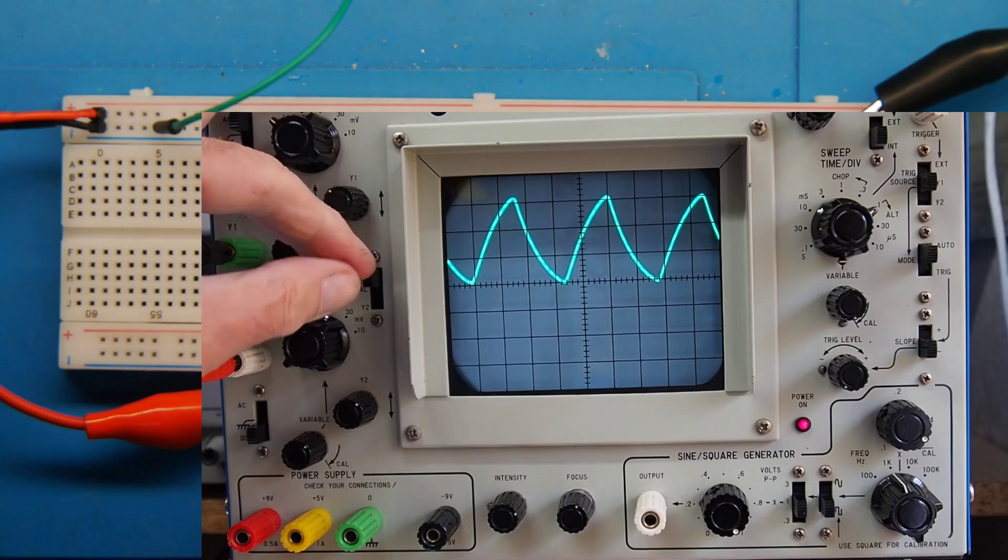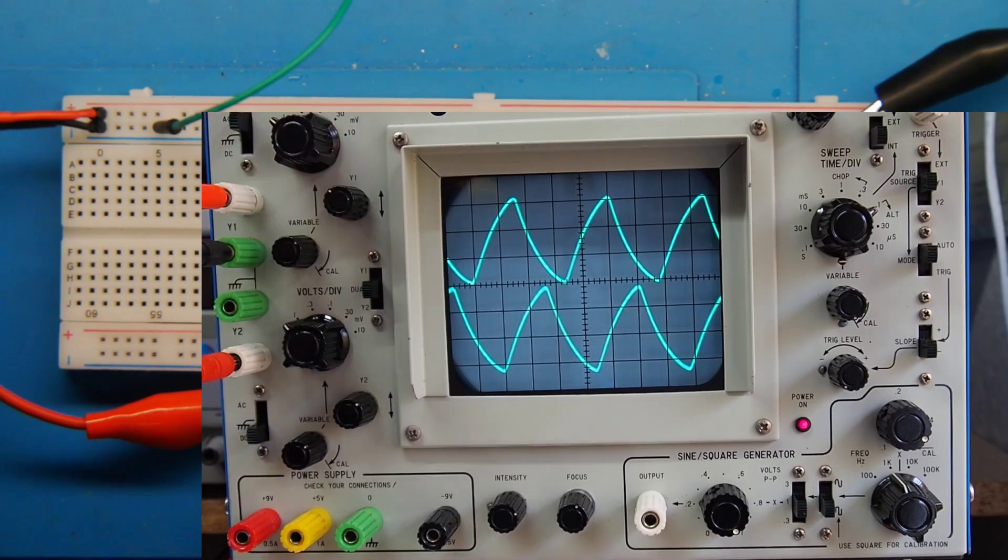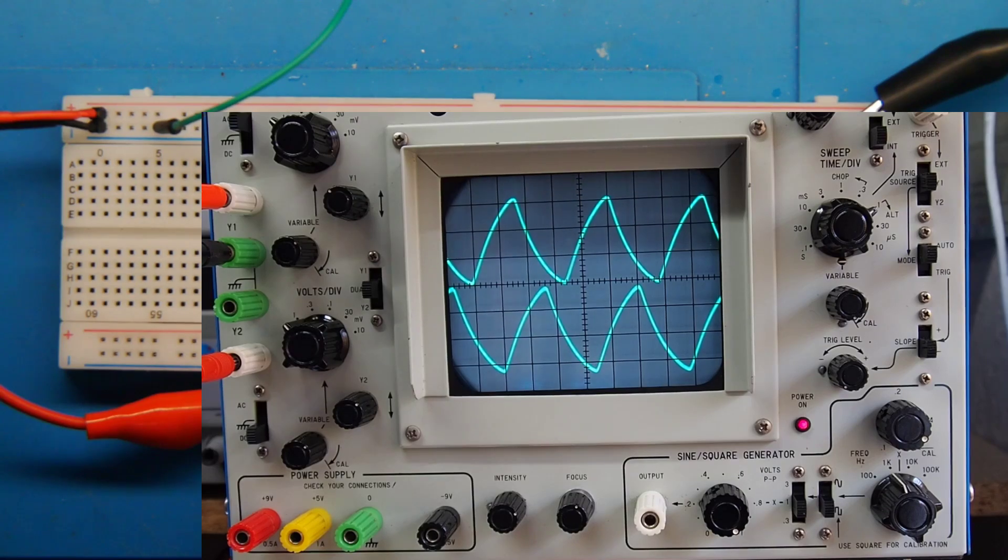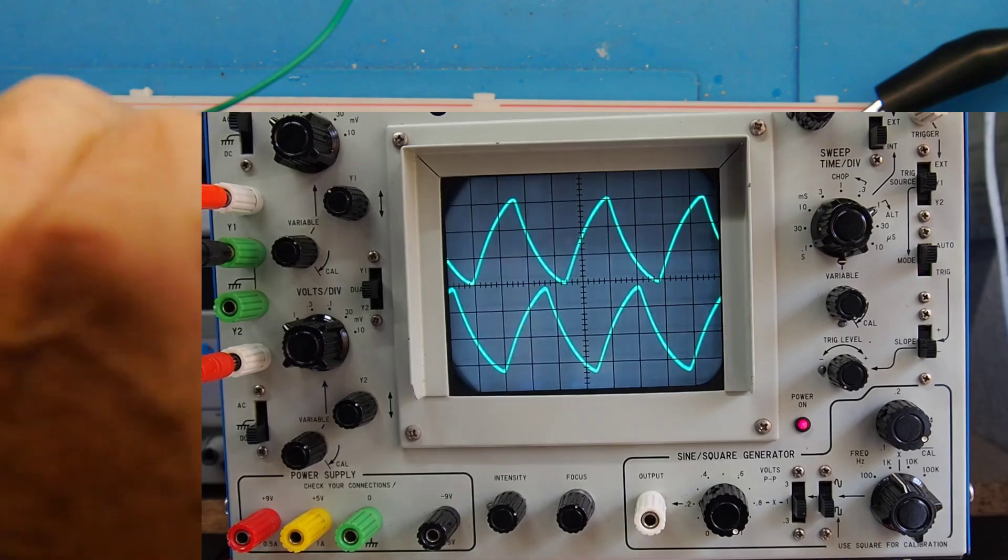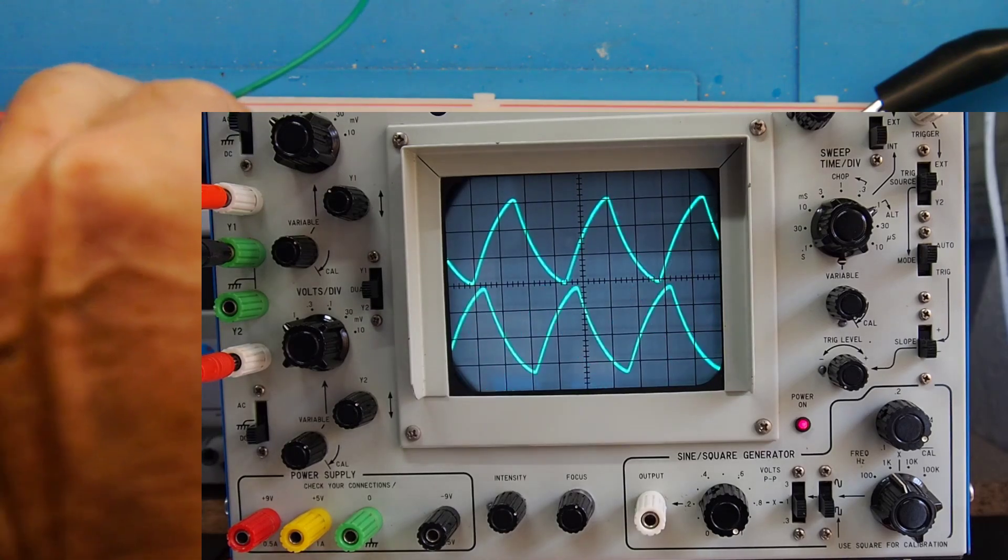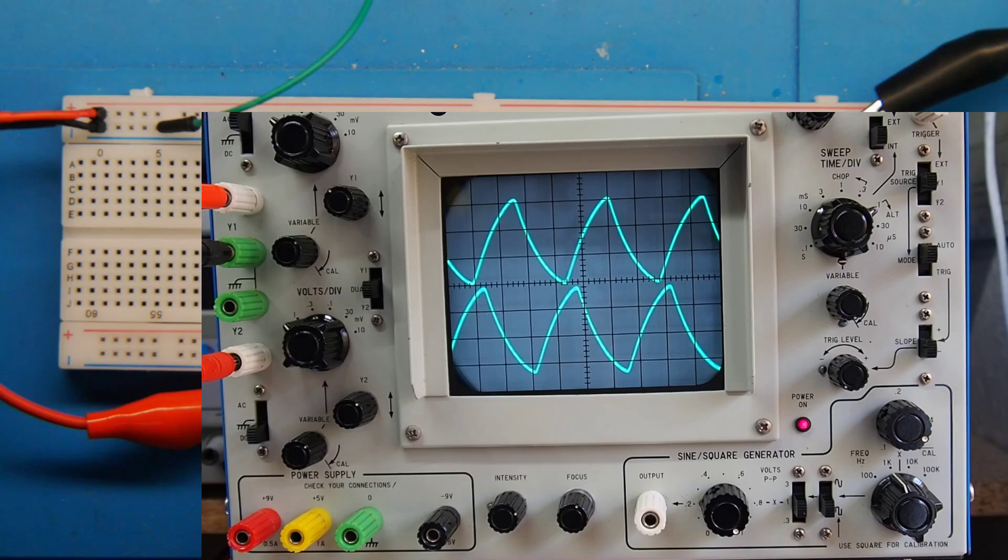So now let's switch on the second trace and what we're seeing there is the input to the first gate, and you can see there's definitely a phase shift. If I move along to the second gate like so, we should get a different phase shift - so yep there you go, that's the phase being shifted by the capacitors.